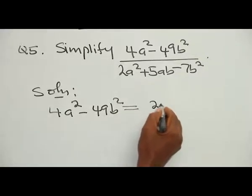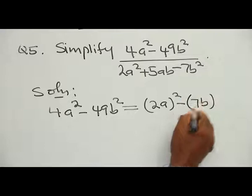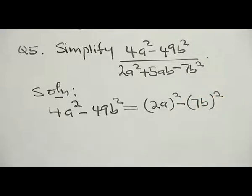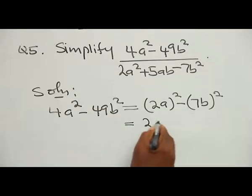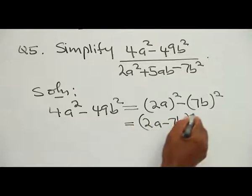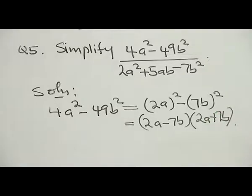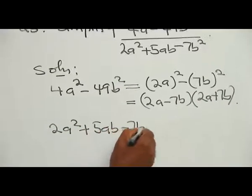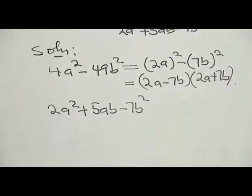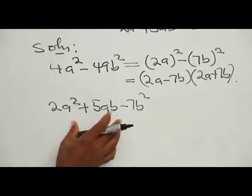We now have a difference of two squares, which we write as (2A minus 7B)(2A plus 7B). Now we take the denominator: 2A squared plus 5AB minus 7B squared. Let me use this to explain quadratic factorization.